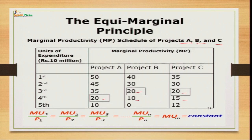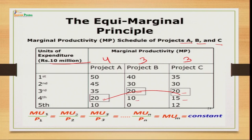Talking about equi-marginal productivity, in project A we get marginal productivity of 20 at the 4th unit. So we allocate 4 million to project A, 3 million to project B, and 3 million to project C — totaling 10 million. This is how we divide the 10 million across different projects so that the marginal productivity at the end remains the same.